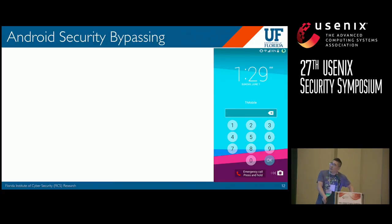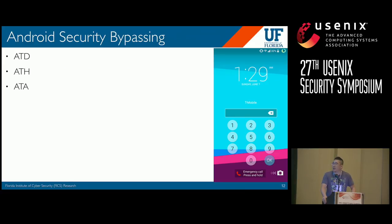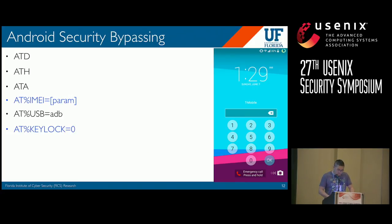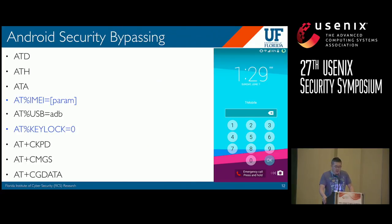Some commands bypass Android security mechanisms. We can make a call, hold a call, or answer a call just from a USB cable, regardless of whether the screen is locked. One command changes the IMEI value, which is the unique identity of the mobile device. Another command enables ADB debugging. A keylog command unlocks the screen log even if it is PIN protected. One command allows sending keypad inputs, SMS messages, and even connecting to the internet. All we need is a USB connection to send these AT commands to the phone.